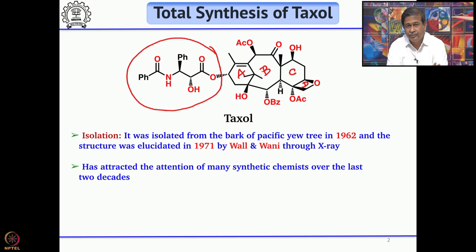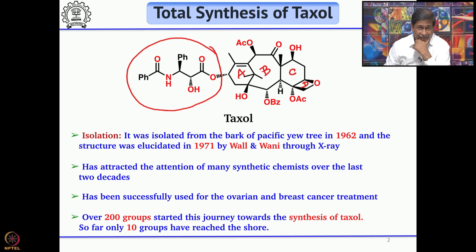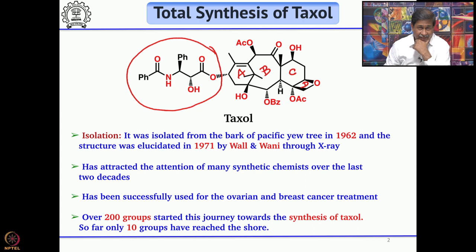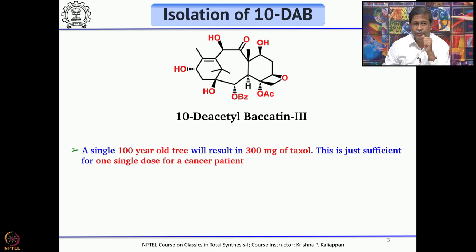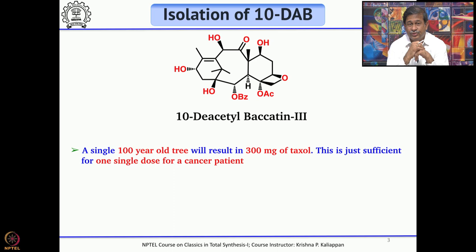Many groups across the globe wanted to work on the total synthesis of this molecule — about 200 groups worked on it, and so far about 10 people have successfully completed the total synthesis of Taxol. The Pacific Yew tree is a very slow-growing tree, and Taxol was isolated from its bark. If you need 300 milligrams of Taxol, you have to kill one Pacific Yew tree that is 100 years old — and that may only be sufficient for one single dose for a cancer patient.